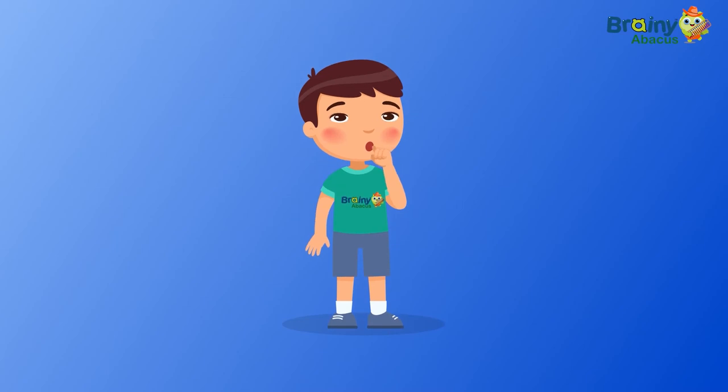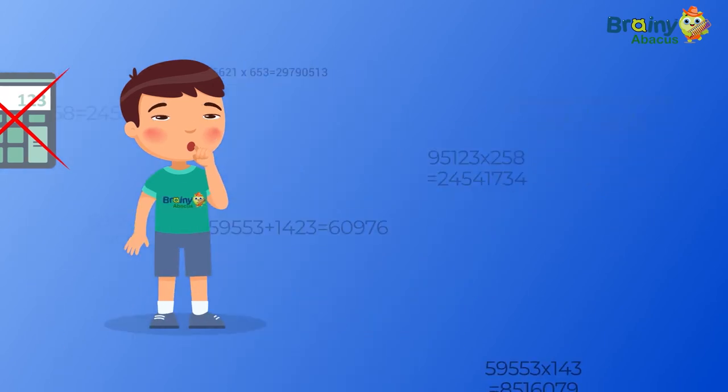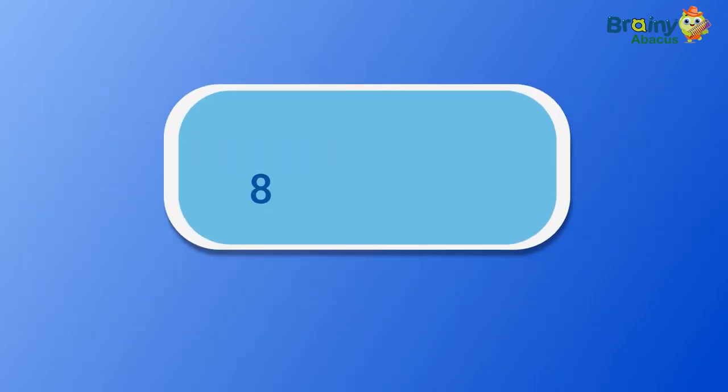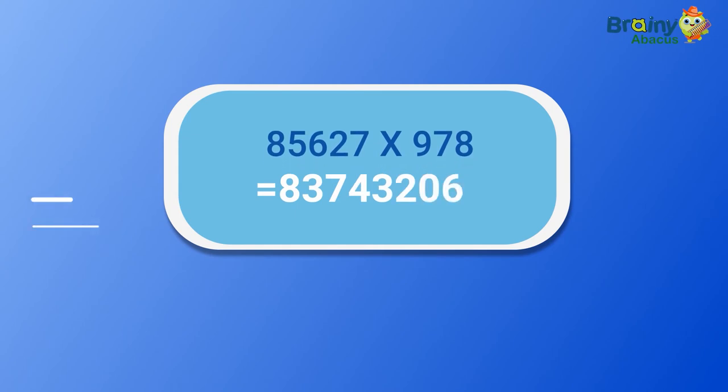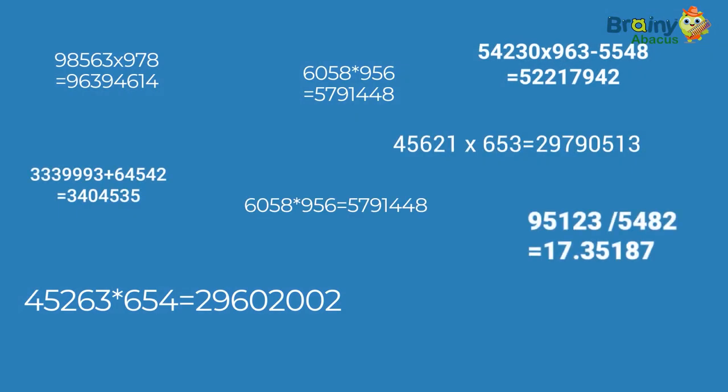Brainy Abacus program enables students to calculate mentally without any calculator. Complex numbers such as 85,627 multiplied by 978 equals levels, or this, or even tougher than in a matter of few seconds.